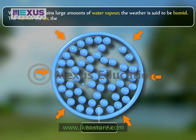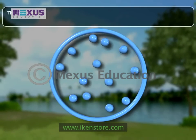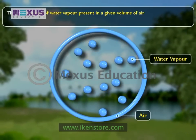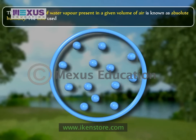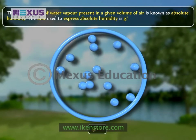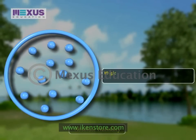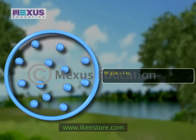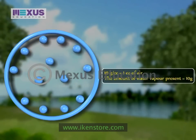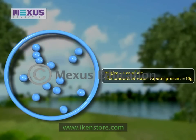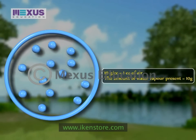The warmer the air, the more moisture it can hold. The total amount of water vapor present in a given volume of air is known as absolute humidity. The unit used to express absolute humidity is grams per cubic centimeter. If the absolute humidity is 10 grams per cubic centimeter, then in a sample of 1 cubic centimeter of air, the amount of water vapor present is 10 grams. Absolute humidity is not a very useful measure because it does not take temperature into consideration.